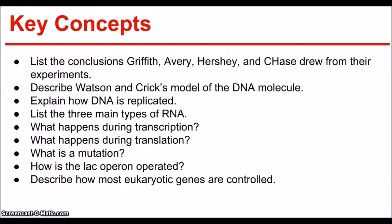We just forgot the key concepts for chapter 12. The key concepts: List the conclusions that Griffith, Avery, Hershey, and Chase drew from their experiments. Describe Watson and Crick's model of the DNA molecule. Explain how DNA is replicated. List the three main types of RNA. What happens during transcription? What happens during translation? What is a mutation? How is the lac operon operated? How is it turned on and off? And describe how most eukaryotic genes are controlled.